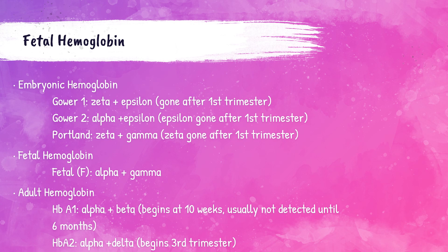I've discussed normal hemoglobin types in my lecture on hemoglobin, but let's do a quick review. When the fetus is in utero, they have embryonic hemoglobin. These embryonic hemoglobins are called Gower 1, Gower 2, and Portland. Gower 1 is composed of Zeta and Epsilon chains. Gower 2 is composed of Alpha and Epsilon chains. Hemoglobin Portland is composed of Zeta and Gamma chains. These embryonic hemoglobins — specifically the Zeta and Epsilon chains — are gone after the first trimester. Fetal hemoglobin is composed of Alpha and Gamma chains. Hemoglobin A2 is composed of Alpha and Delta chains and begins to develop in the third trimester.